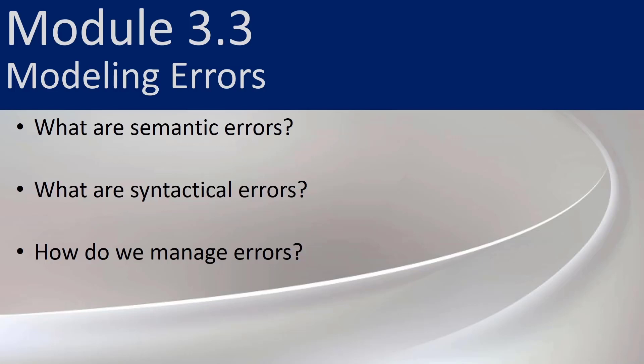In Module 3.3, we're going to be talking about the two types of errors that we might find in our ER modeling: semantic errors and syntactical errors, and we're going to talk a little bit about how we manage those errors.